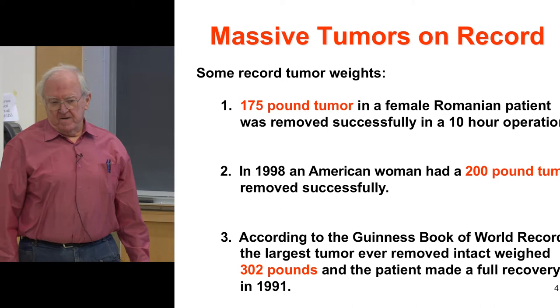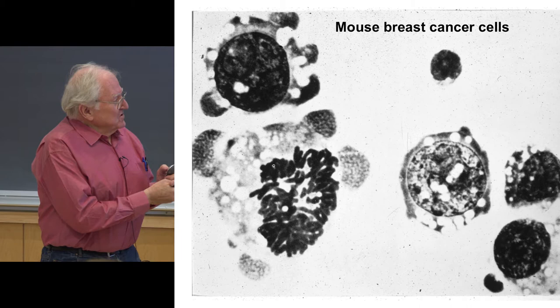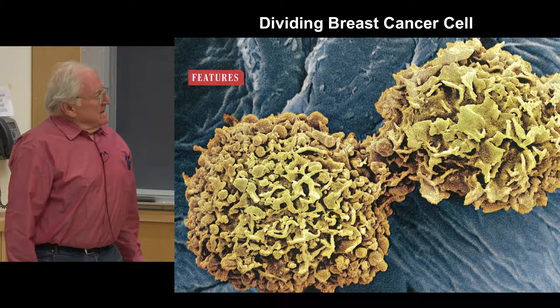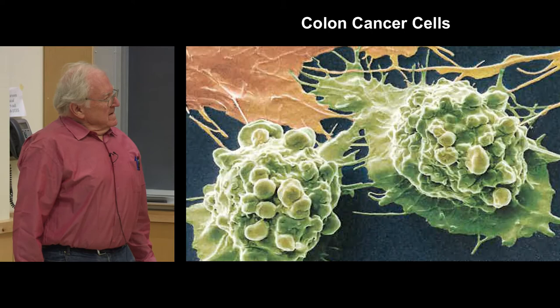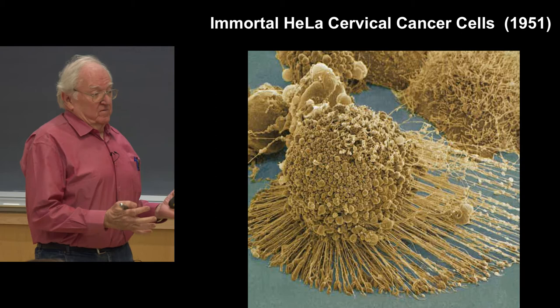This is what cancer cells look like — these are mouse breast cancer cells. You can see they have an abnormally large number of chromosomes, the nucleus is often very large, and you have these blebs that make the cancer really very ugly and dark. These cells have been immortalized since 1951 — cancer of the cervix that this woman had in 1951, and these cells can be reproduced and studied for cancer research. They're basically immortal.